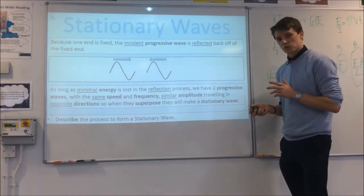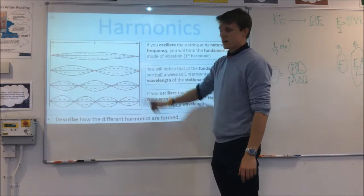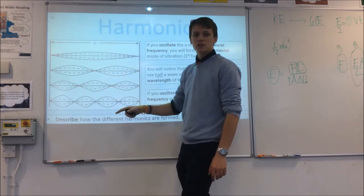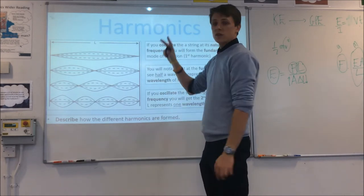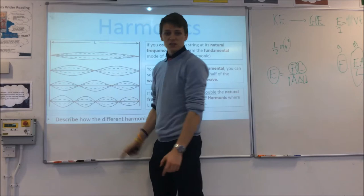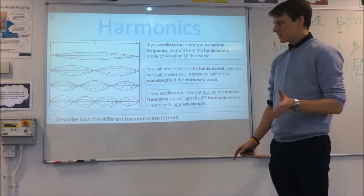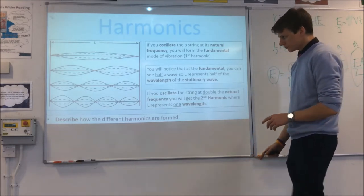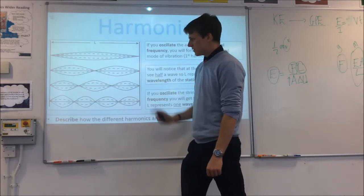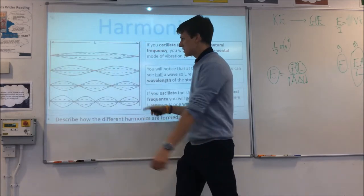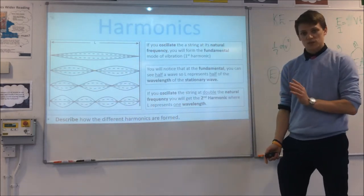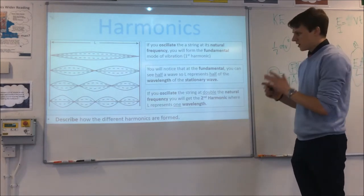What's making those different harmonics? The first one looks like this — at one moment in time it was up, then the whole wave came down flat, then came down the other side. You just see half a wave moving up and down, which is called the fundamental or the first harmonic. Because you only saw half a wave, the distance between the nodes is half a wavelength. That gives you a way of working out the frequency or wavelength of your stationary wave. The second harmonic is when you oscillate it at double the fundamental frequency, so you can see a full wavelength along here, but the distance between nodes is still half a wavelength.